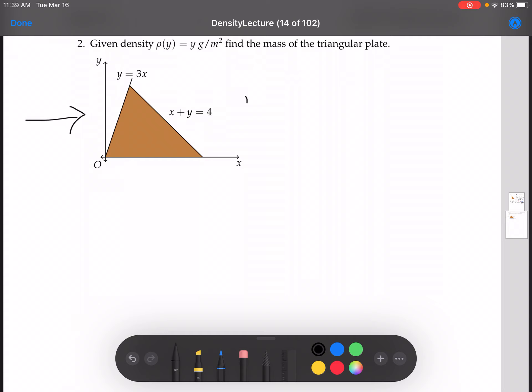Remember that mass is the integral from a to b. This is the general formula, where a is where to start integrating and b is where to stop integrating. We have our density function rho times dA.